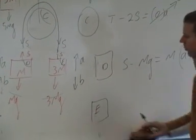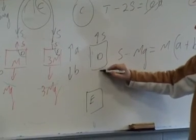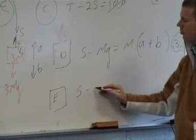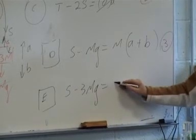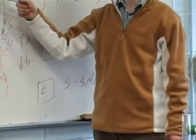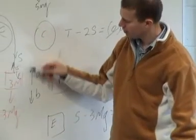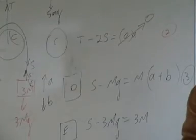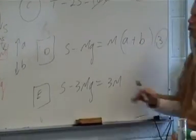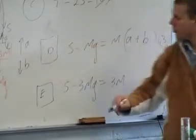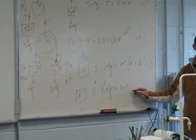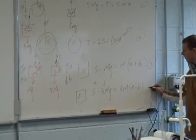For particle E, the force up is S and the force down is 3mg. The equation is: S minus 3mg equals 3m times (A minus B). We have to decide before we start whether this particle moves up or down overall. It's going up at one acceleration and down at another, so we assume — let's say upward. With that assumption: upward force minus downward force equals 3m times upward acceleration minus downward acceleration, which is A minus B. That's equation number four.